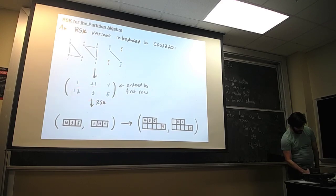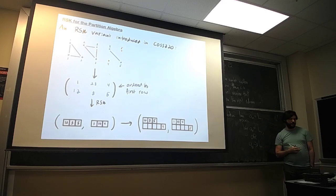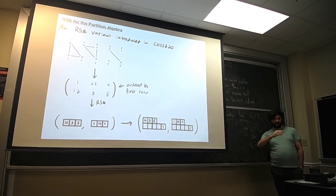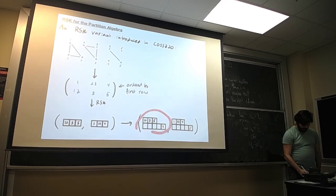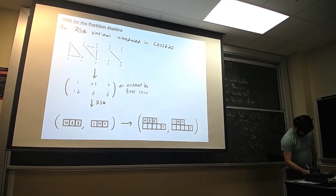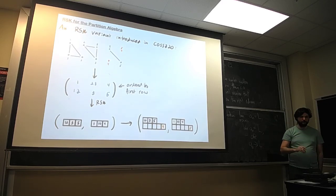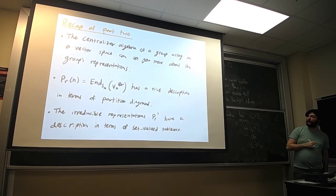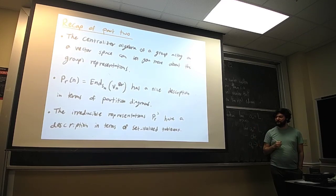We insert the first row and along the way record the values in the top row. This gives us a pair of tableaux with almost all of the content — just missing the pieces we ignored. How we account for the isolated top and bottom blocks is by putting them into a bottom row with empty boxes. The big ideas here: the centralizer algebra of the group acting on a vector space can tell you more about the group's representations. This partition algebra has a nice description in terms of partition diagrams, and we have this RSK-like correspondence between the two.